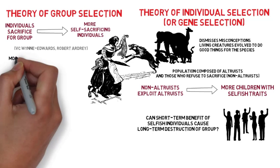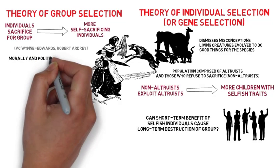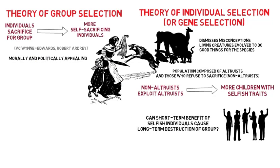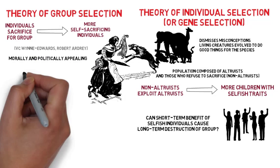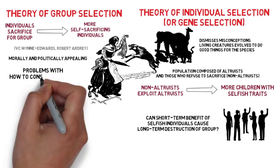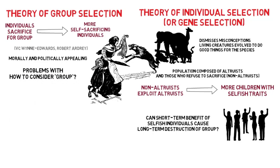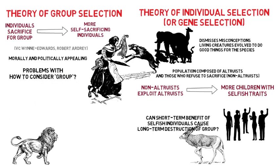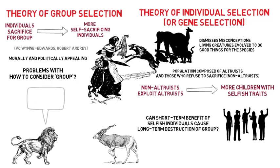Group selection theory may be appealing based on moral and political ideas, but there are problems — such as at what level of the group should we consider? Should lions and antelopes refrain from killing each other because they are both mammals?